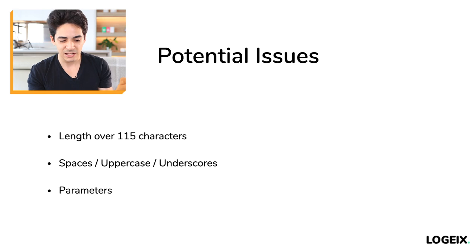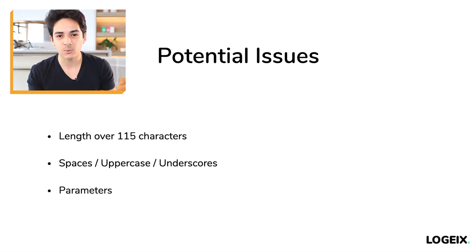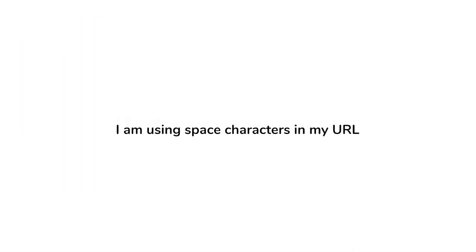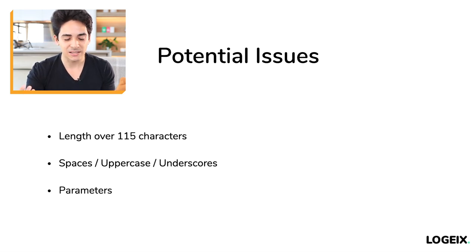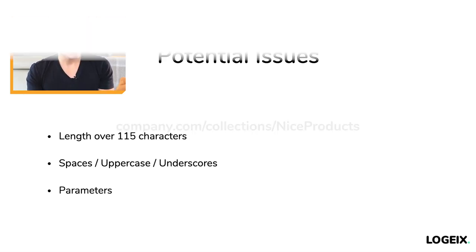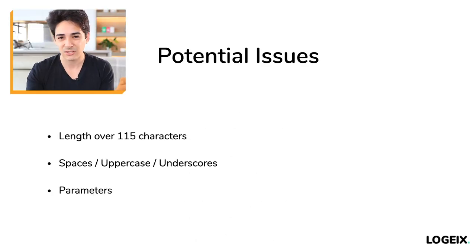You also want to look at things like spaces, uppercase characters, or underscores — bad delimiters between URL segments. If you have a space in a URL, it ends up showing as percent 20 and looks bad. Underscores are also not typical for URLs; it should be a hyphen. And uppercase characters can cause a 404 page if the server only recognizes the uppercase version.